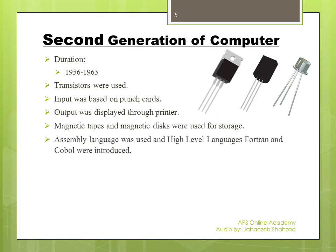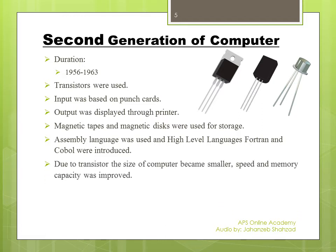The language used in second generation computers was assembly language, and they also introduced two high-level languages: COBOL and FORTRAN. In the first generation, machine language was used. Due to transistors, the size of computers became smaller, their speed and memory capacity were improved, and they were much faster with larger storage capacity compared to the first generation.